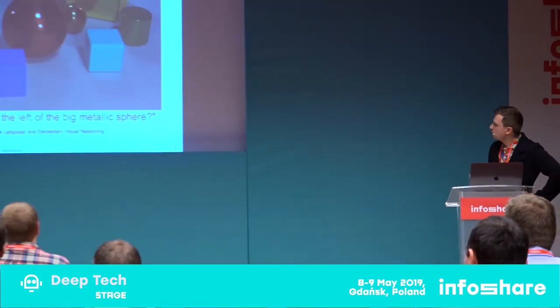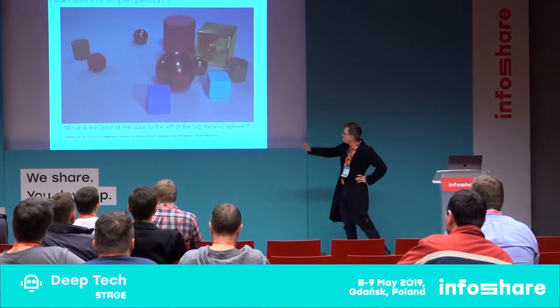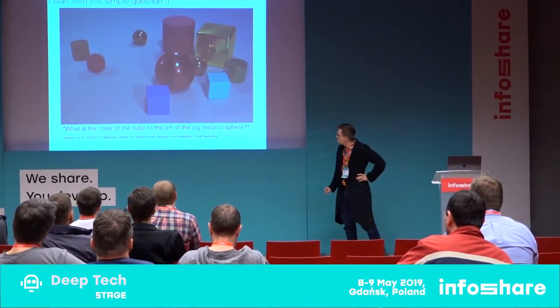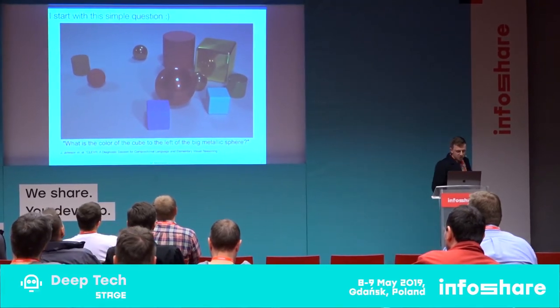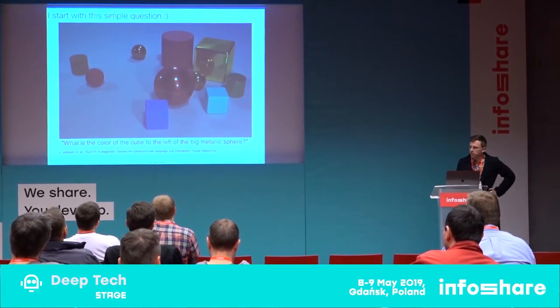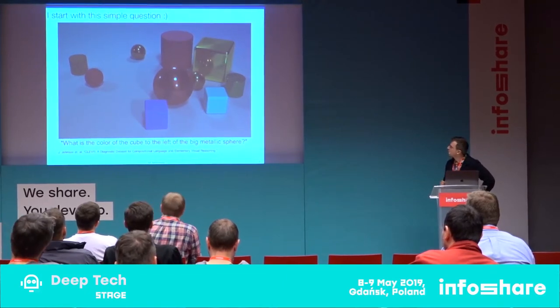First I will start from this simple question. Let's imagine that we have this scene of different objects and then we have a question like: what is the color of the cube to the left of the big metallic sphere? I'll pause for a moment and let you try to answer this question about this image.